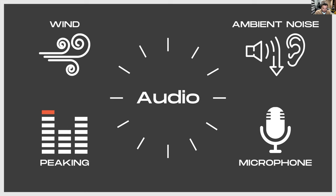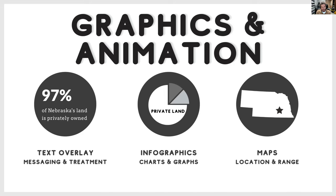Another element used in videos is graphics and animation. The most common is text treatment — text overlay — using written text to help get messaging and narrative across. Since a lot of people won't have their speakers on, text ensures they're still getting that information. Infographics are also valuable — our graphic design team constantly makes neat charts and graphs to consolidate and simplify complex information from our biologists and research. And maps with range overlays help give people a frame of reference for where things are in Nebraska and show wildlife distribution.